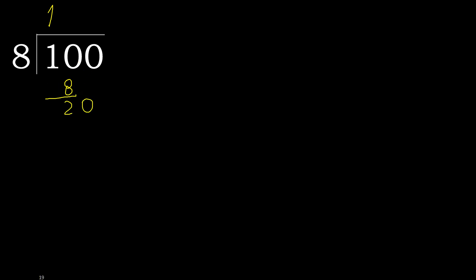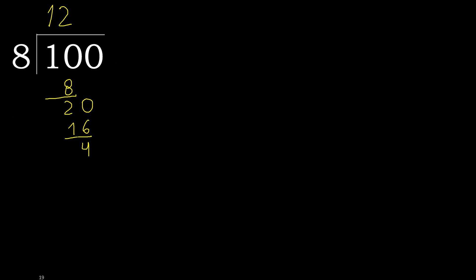20. 8 multiplied by 3 is greater, so multiplied by 2. 16 is not greater. Subtract 4, next.